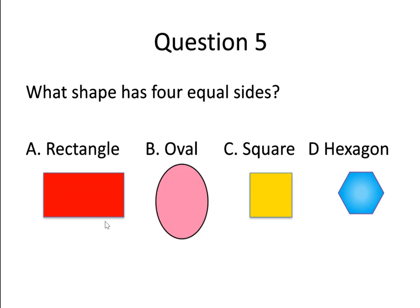Question number 5. Which shape has four equal sides? Option A, rectangle. Option B, oval. Option C, square. Option D, hexagon.